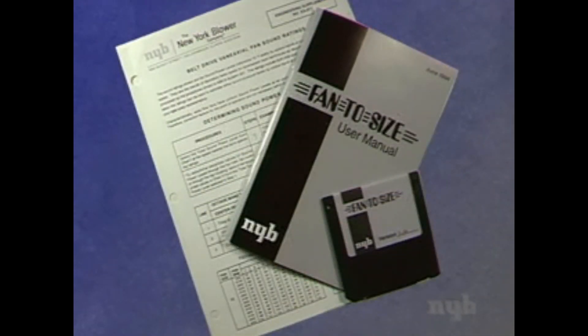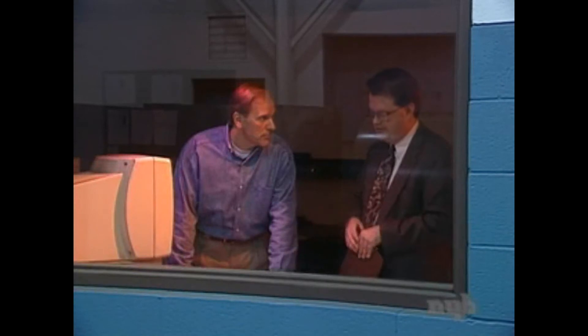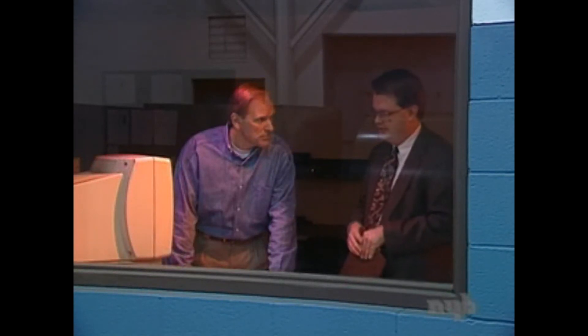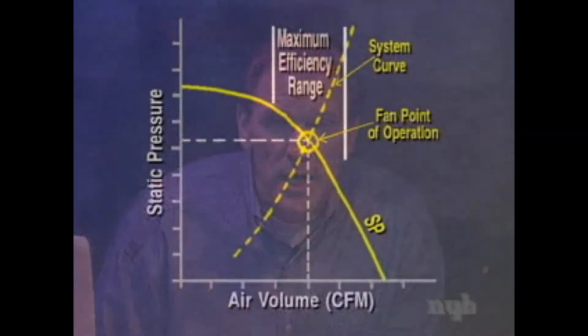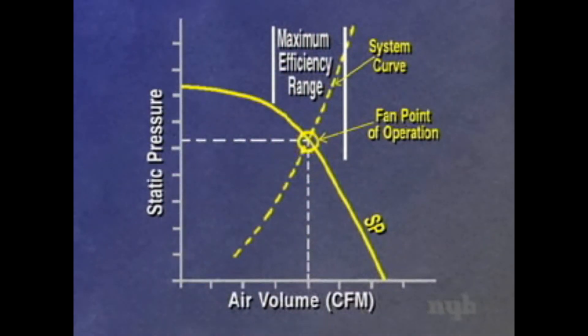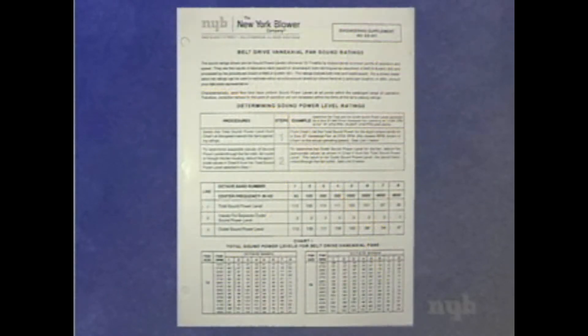New York Blower's fan sound data is available in printed or software formats. The test setup conforms to AMCA Standard 300. Today's setup is Type B, which has a free inlet and ducted outlet, typical for this type of fan equipment. In general, fan sound ratings are calculated in the maximum efficiency range for the fan. When the fan is operating at a point outside of this range, sound rating corrections must be made. These factors are available in the published engineering supplements.